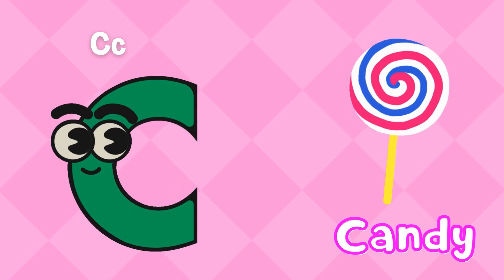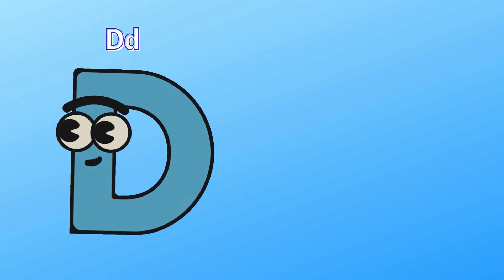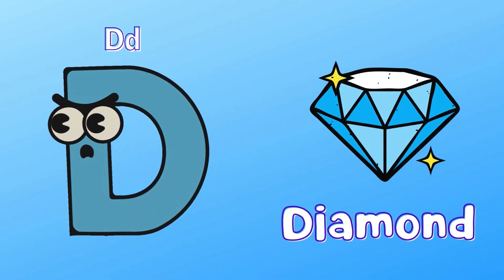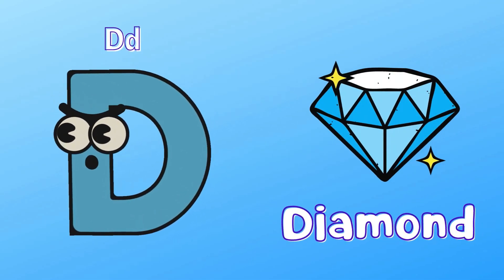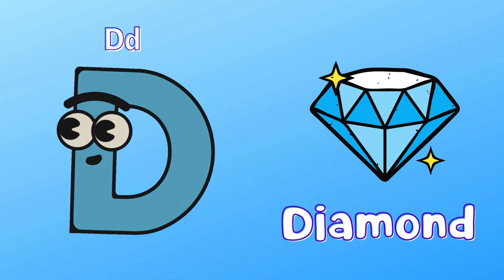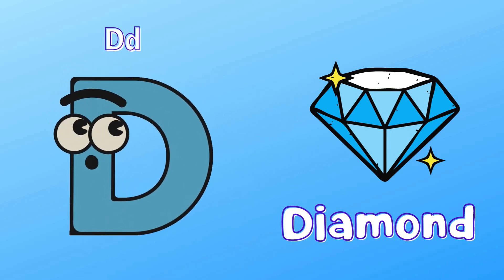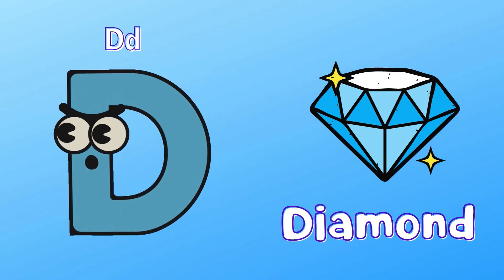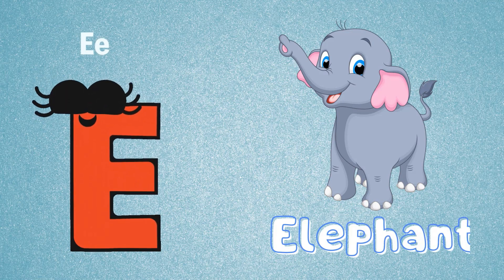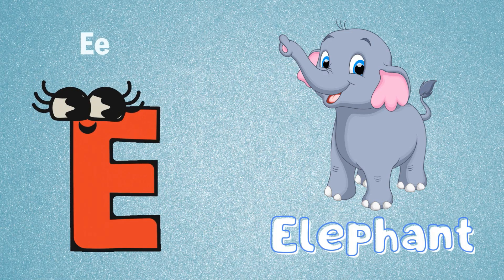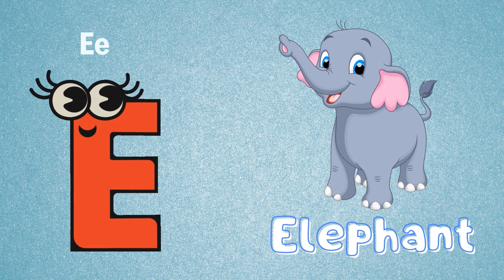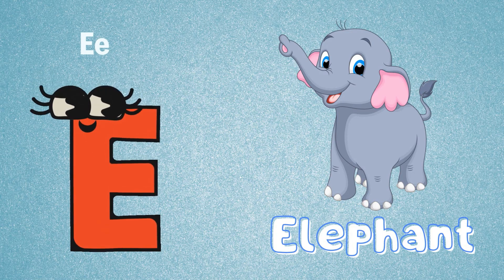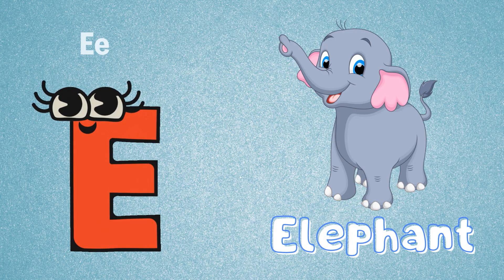D is for Diamond. D-D-Diamond. E is for Elephant. E-E-Elephant.